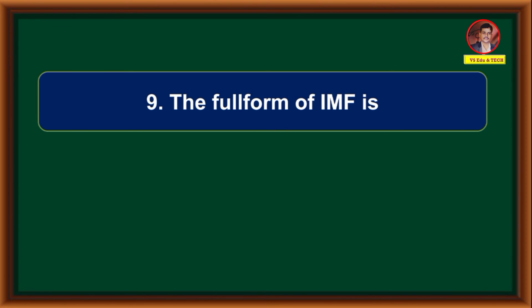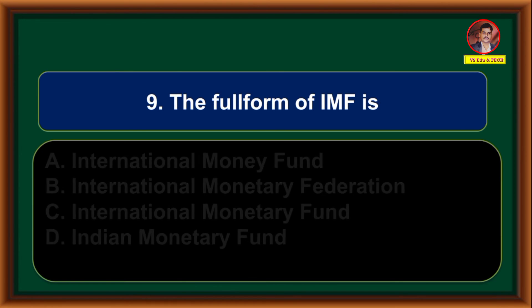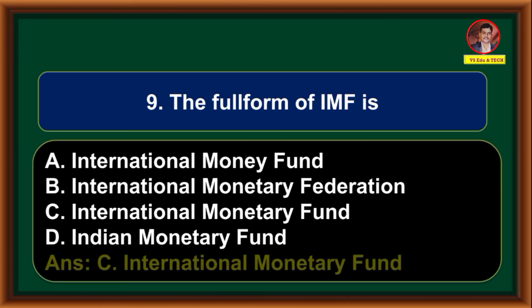The full form of IMF is: Option A: International Money Fund. Option B: International Monetary Federation. Option C: International Monetary Fund. Option D: Indian Monetary Fund. Correct answer is Option C — International Monetary Fund.